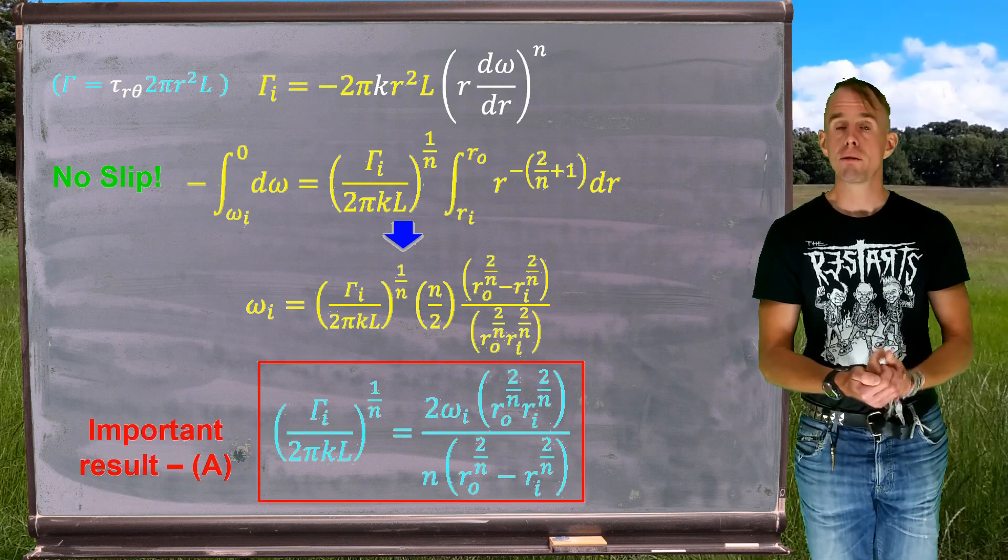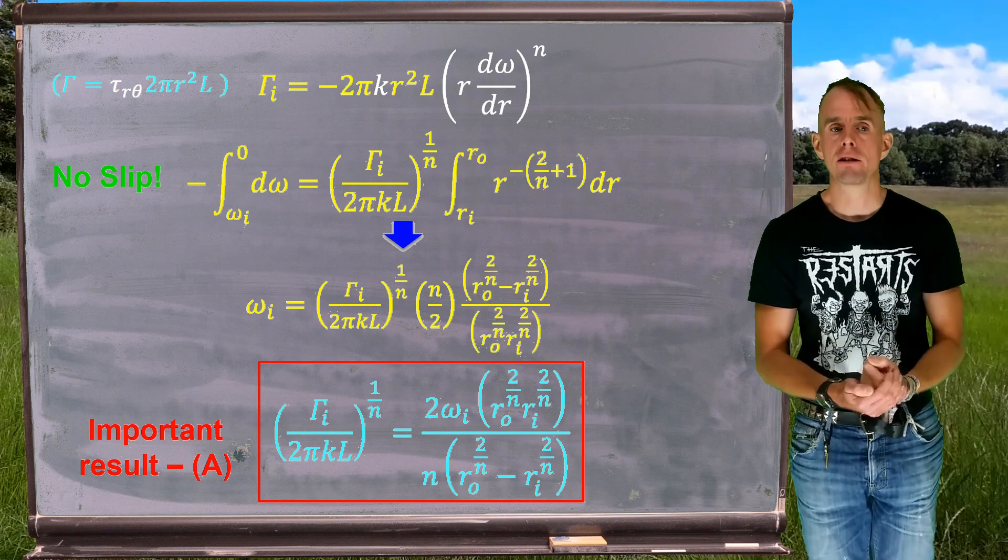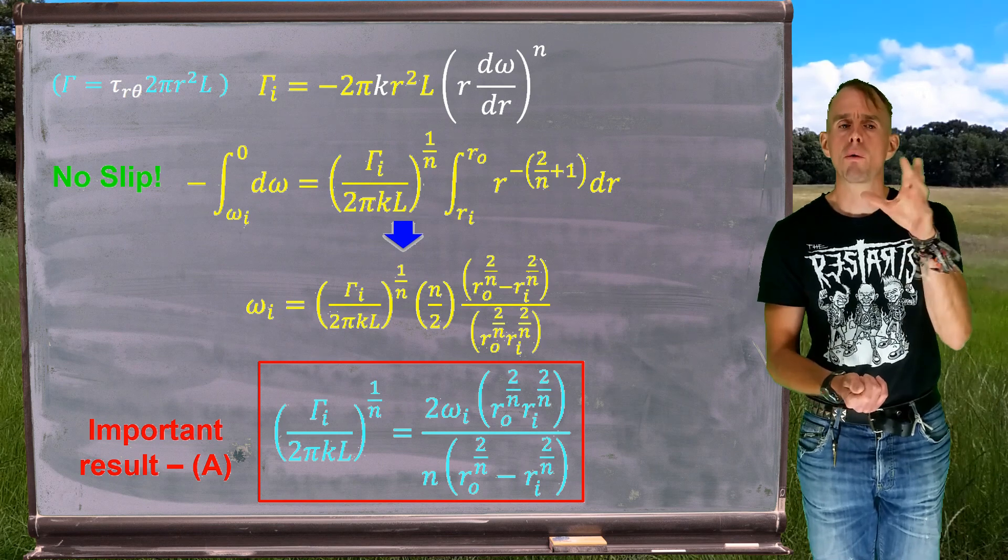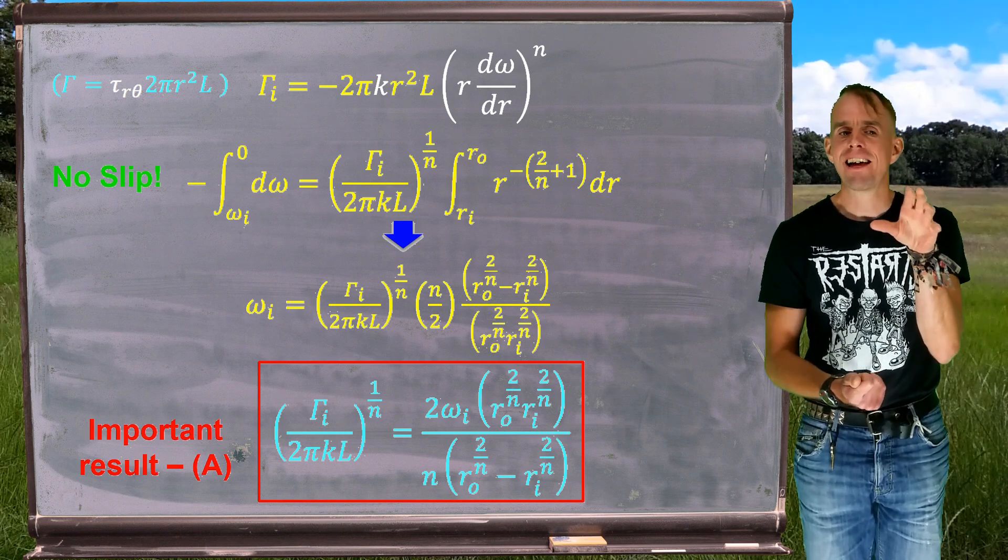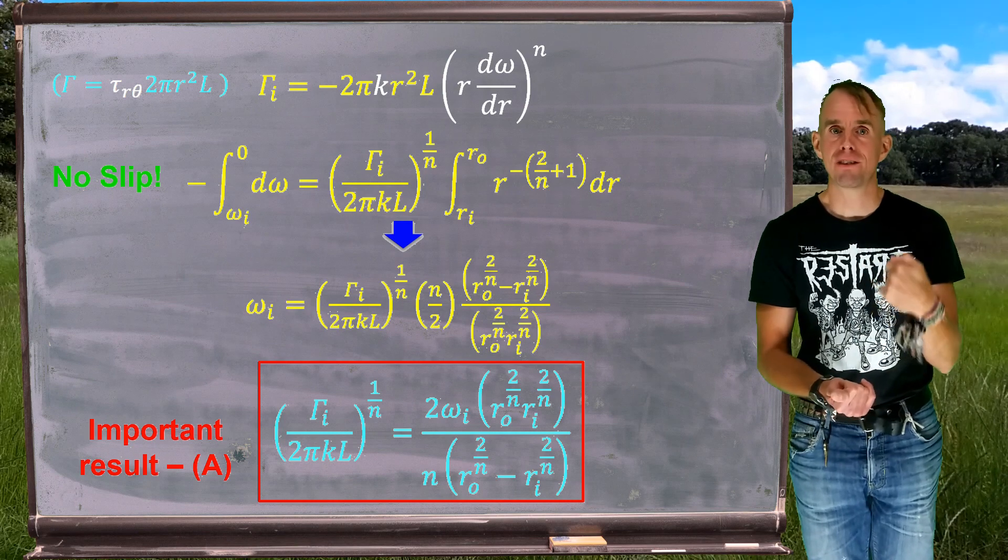So there we have it in terms of a group of torque and in terms of a group involving radii. Now remember for our Newtonian workflow, we rearranged this such that we had an intermediate result that was for that group of terms, including torque. And we're going to do exactly the same here. So here's our intermediate result, which we're going to call A. Our group of terms on the left-hand side, including torque. And on the right-hand side, our by-and-large geometric terms, although now our geometry is affected by our power law index because we have 2/n rather than just 2.